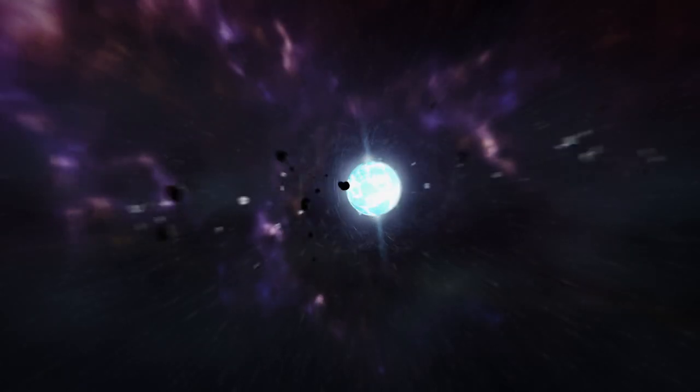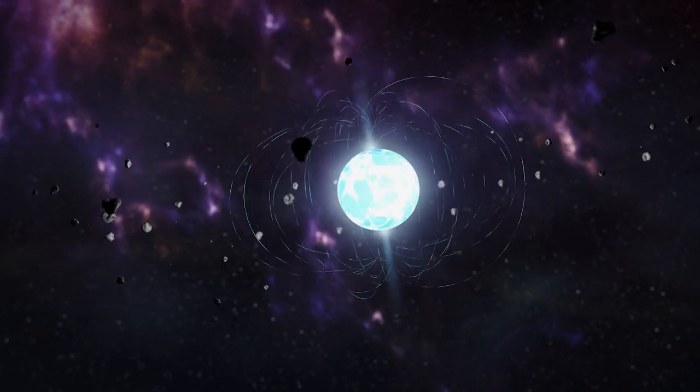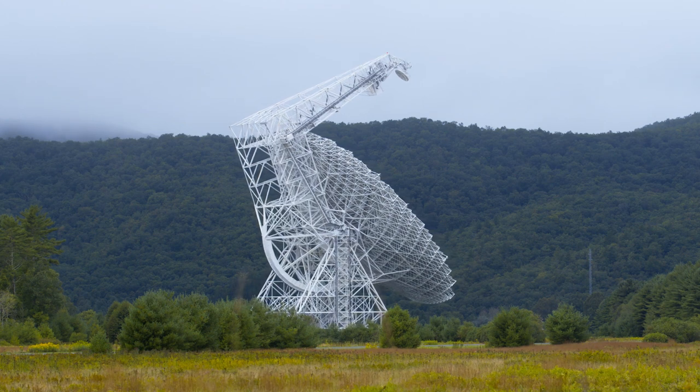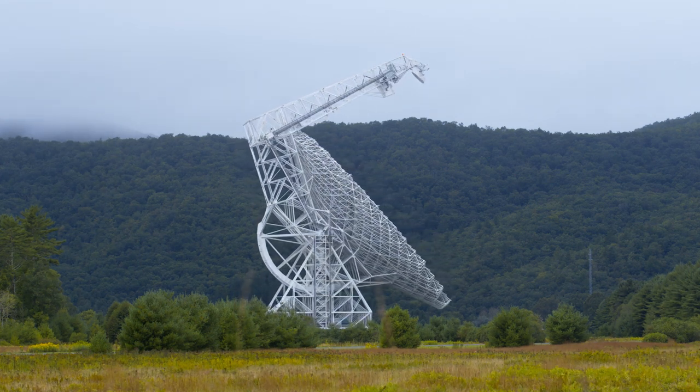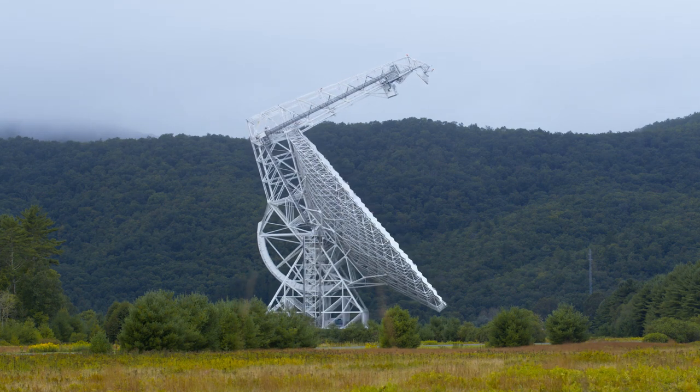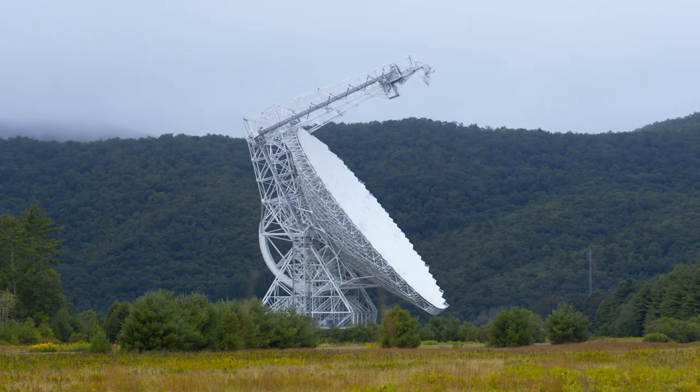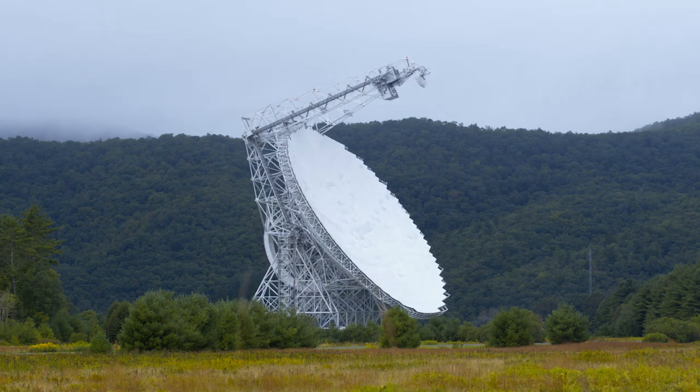The radio waves coming from 121102 tell us something extraordinary. We saw that they were really twisted up, kind of like a corkscrew. And the degree of twist is higher than in any other source of radio waves that we've ever detected. So we think that this could be a sign that FRB 121102 is itself living somewhere near a black hole.